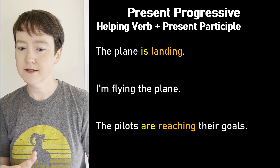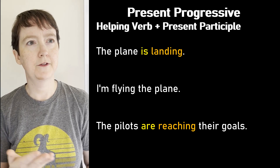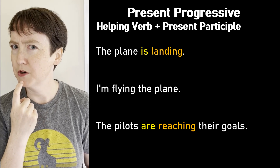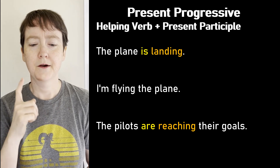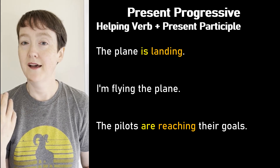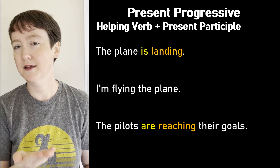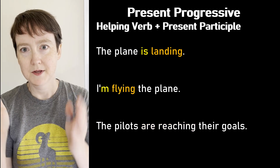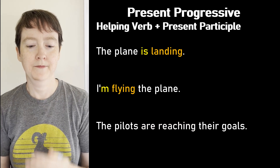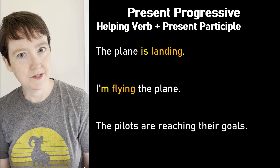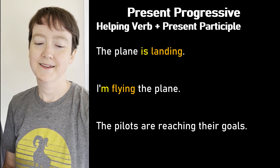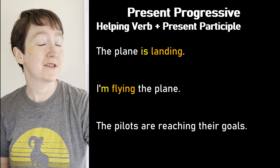And the second sentence: 'I'm flying.' Where is the helping verb? It's connected to the subject as a contraction. I — subject. Am — helping verb. But then I'm is the contraction. Flying — present participle. The plane — object. Can you find all the parts in the third sentence also?